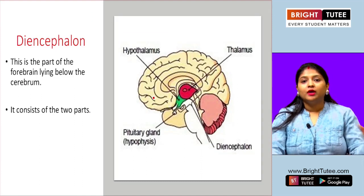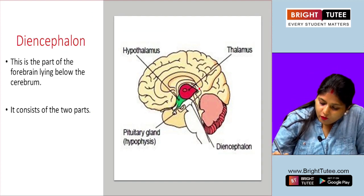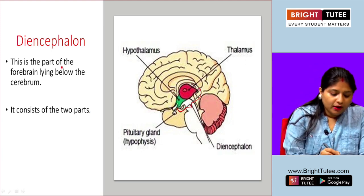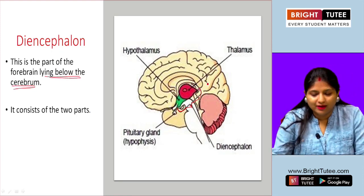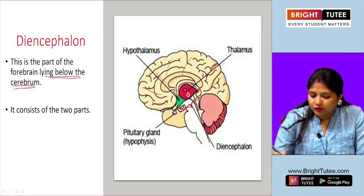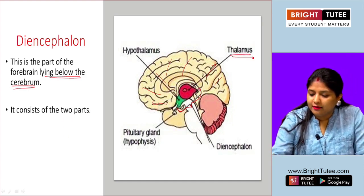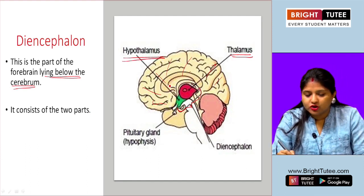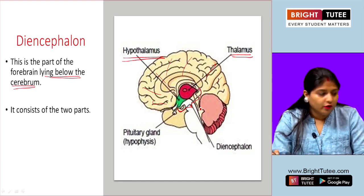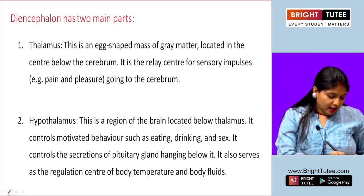Now let's talk about the diencephalon, another important part of the forebrain lying below the cerebrum. The diencephalon has two parts: the thalamus and the hypothalamus. Let's talk about the function of both of these.